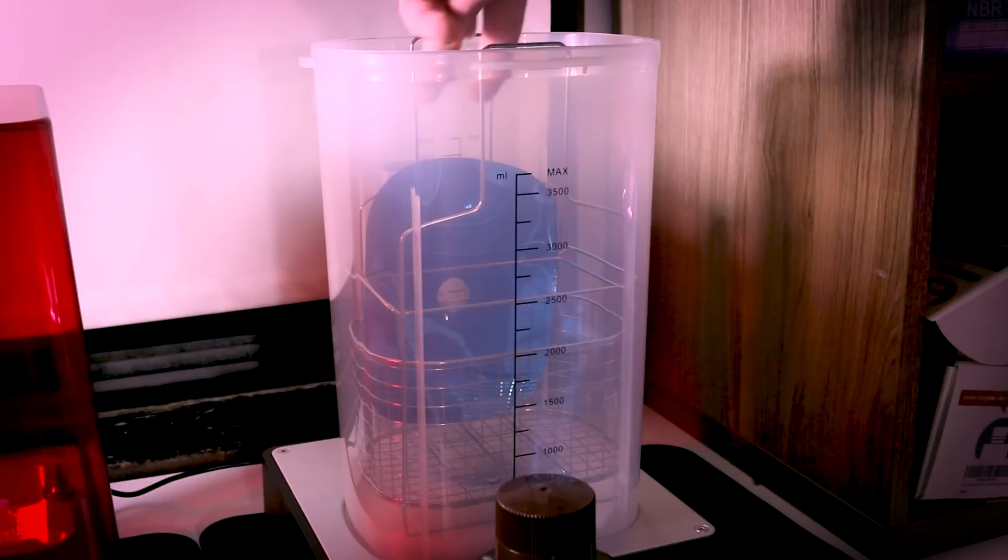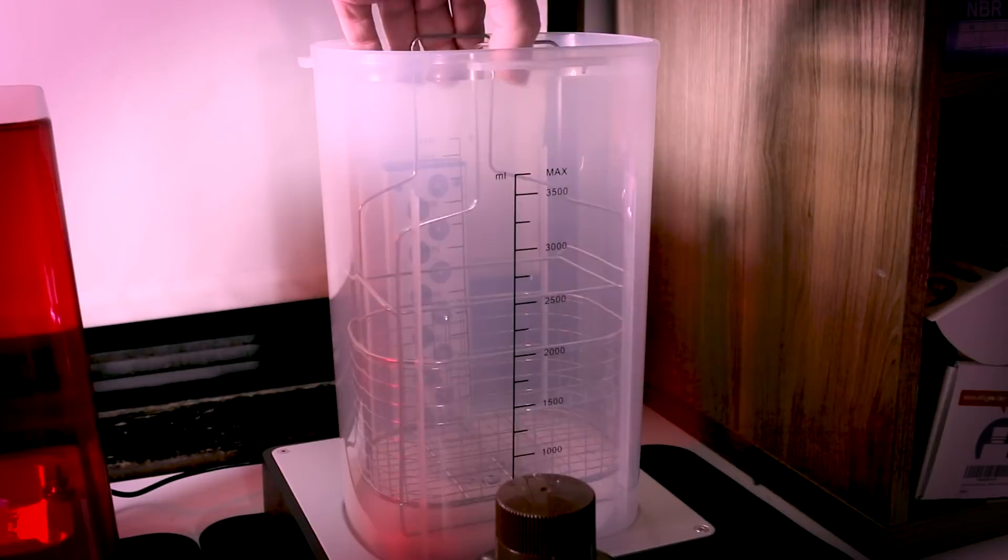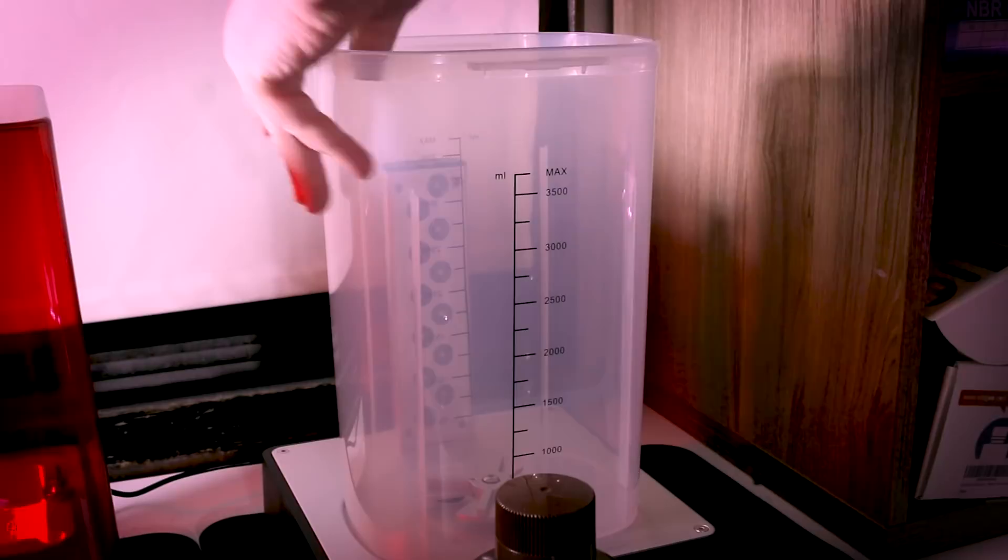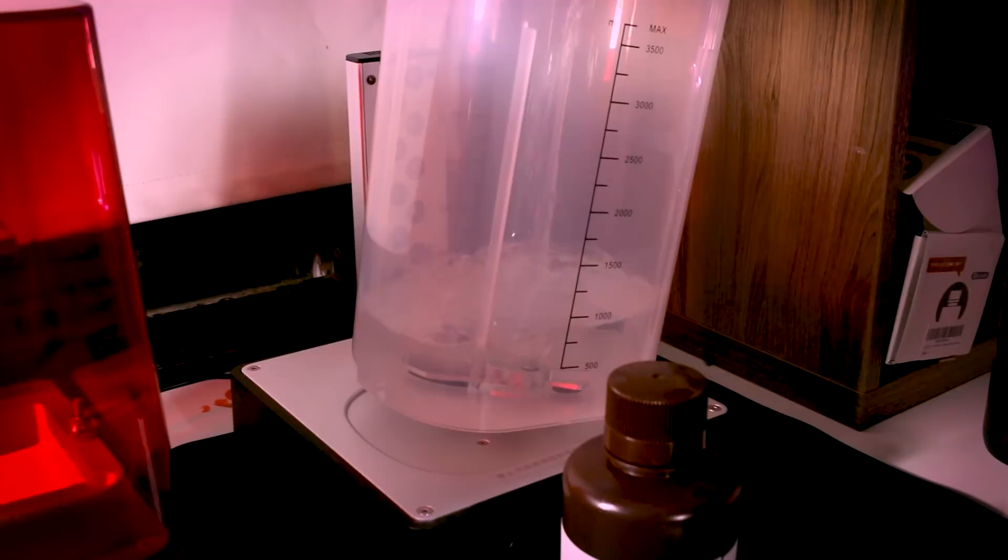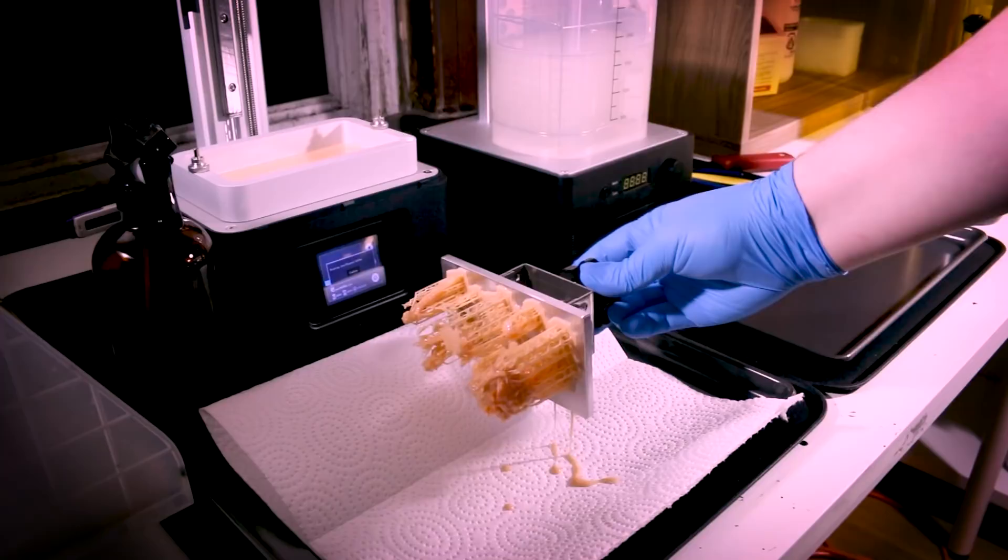While our stuff is printing, we can set up our wash and cure machine. The machine has two functions as it's implied, wash and cure. And to start off, we're just going to remove all the stuff inside the container and fill it up with isopropyl alcohol. This stuff has a really strong smell, so make sure you're wearing a respirator and close up the container once you're done filling it.